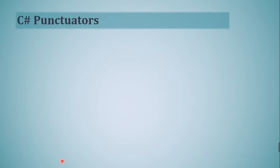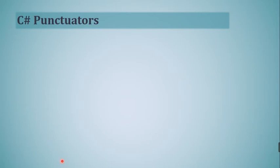The next type of token is punctuators. A punctuator is also called a delimiter or separator. It is a sequence of one or more characters or symbols, and these are the punctuation of the language. These are very similar to the punctuation of the English language — just as we use various symbols to separate words and paragraphs in English, similarly in C# we also have various types of punctuators.